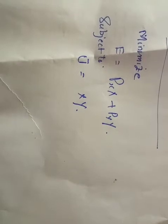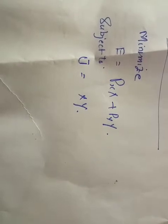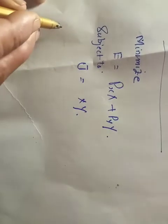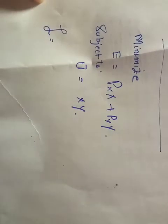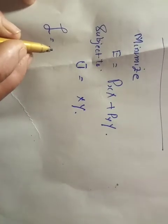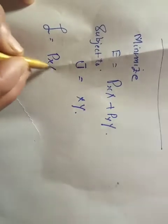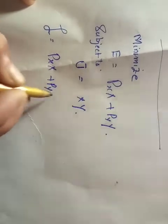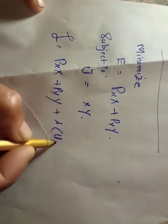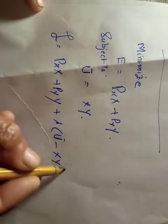We convert both functions into a composite function. This technique is also called the Lagrangian method. Converting both functions into the Lagrangian gives us the expression plus lambda times U(x, y).